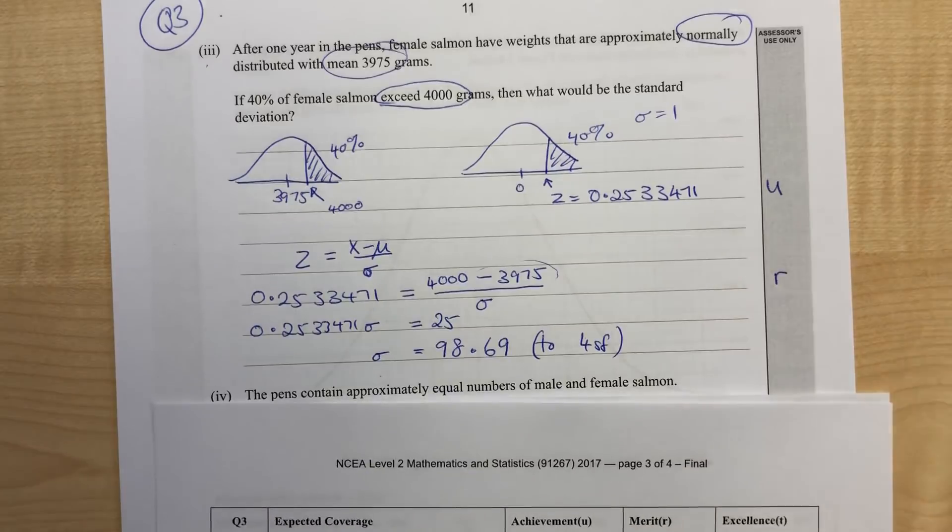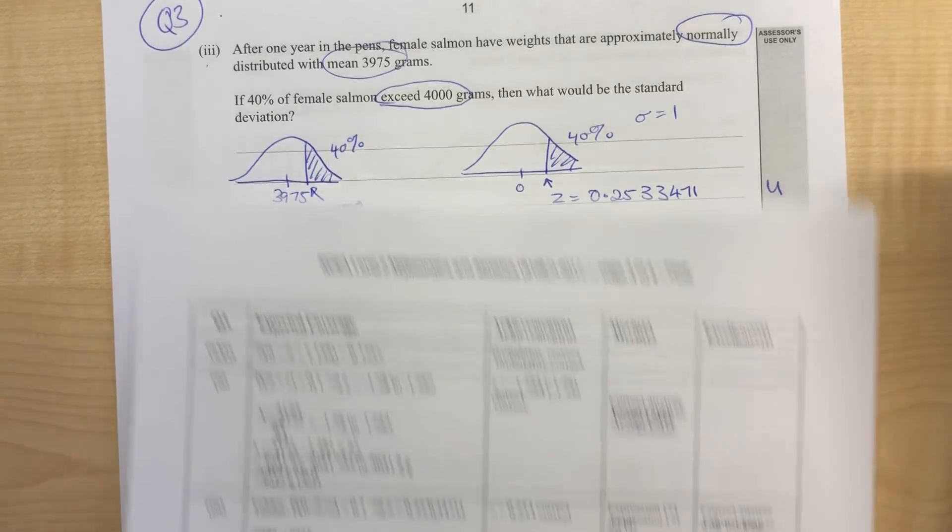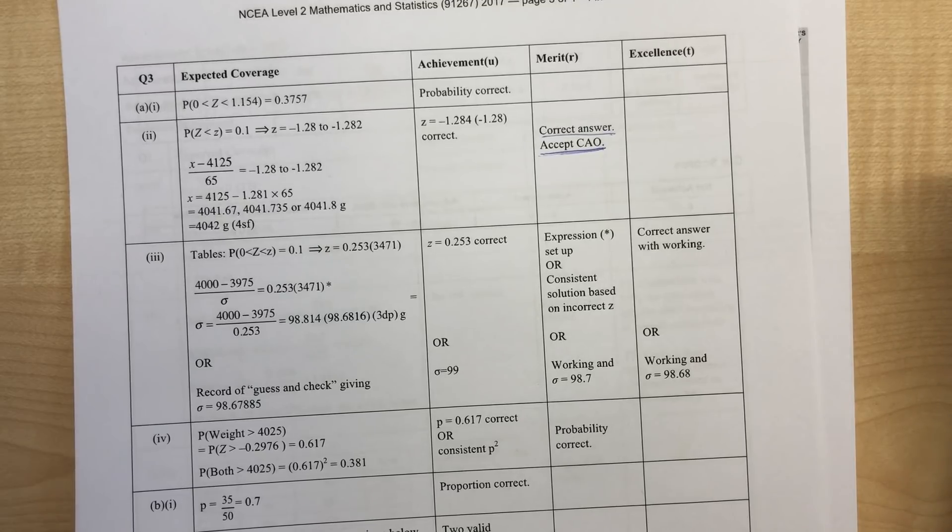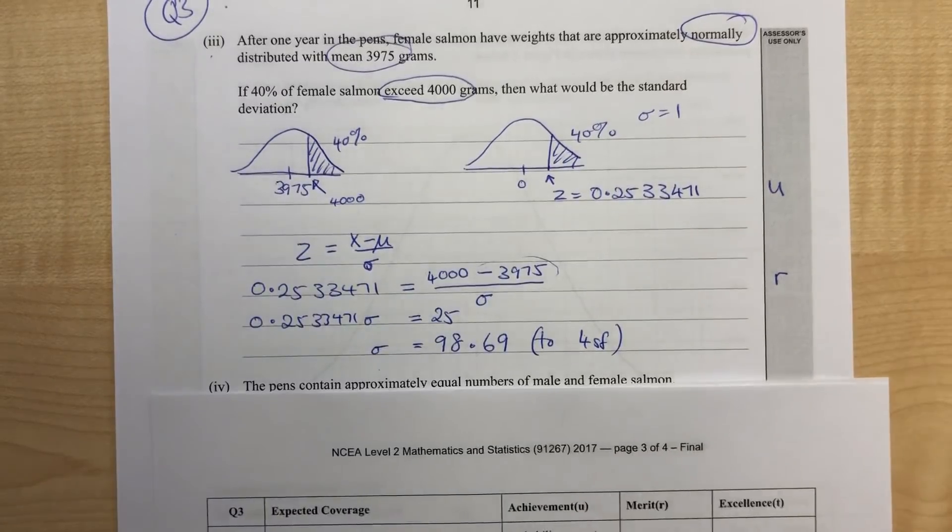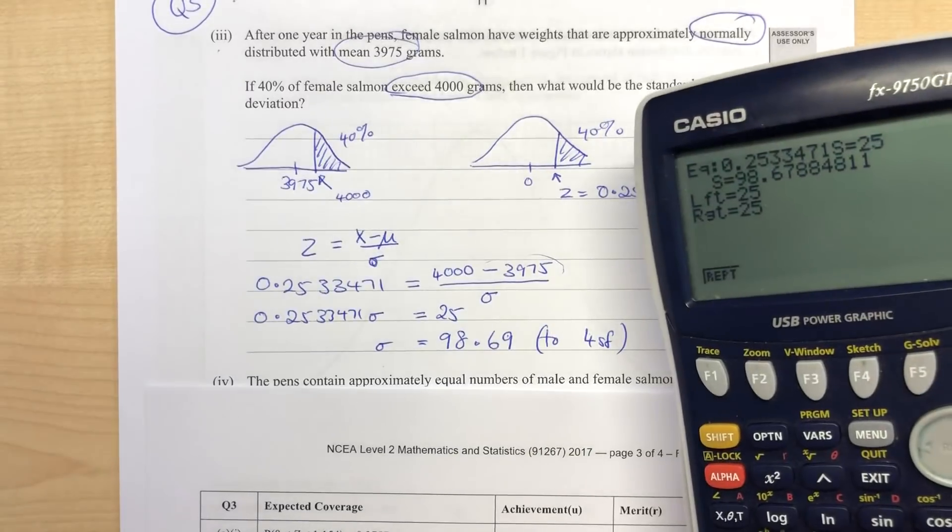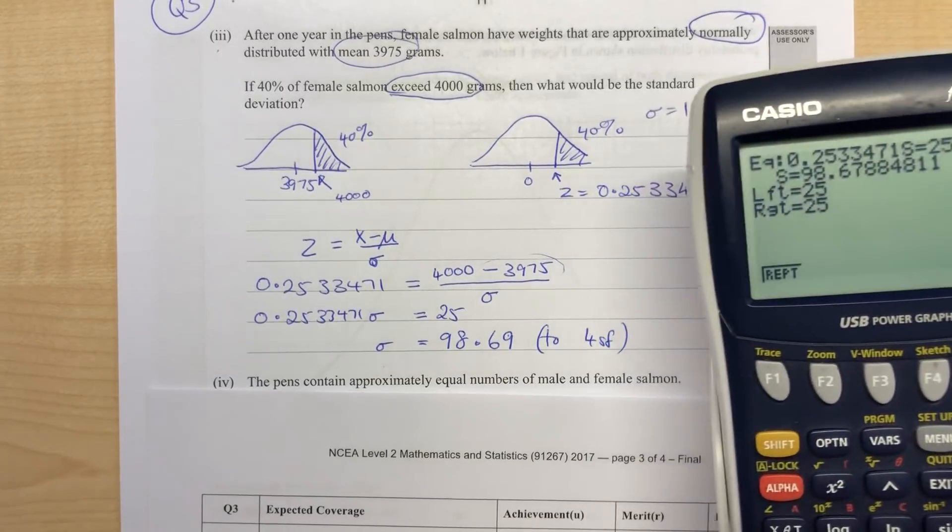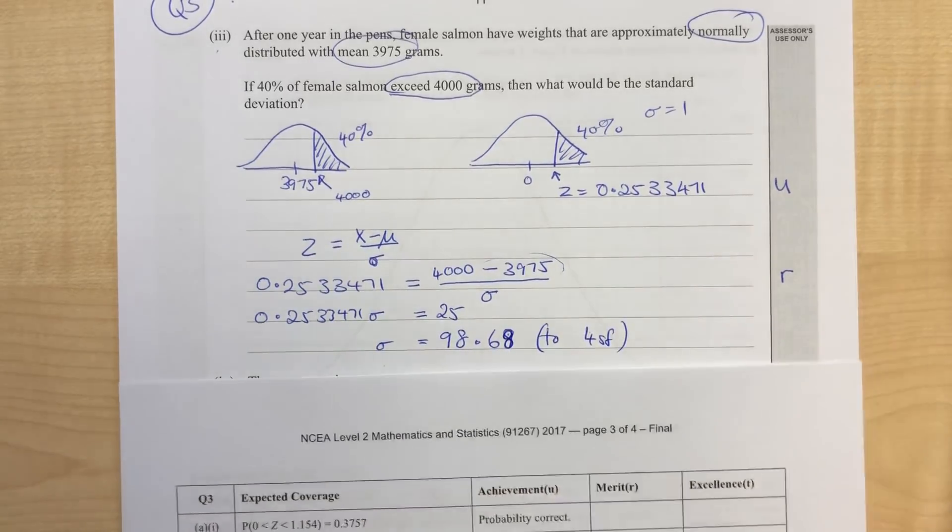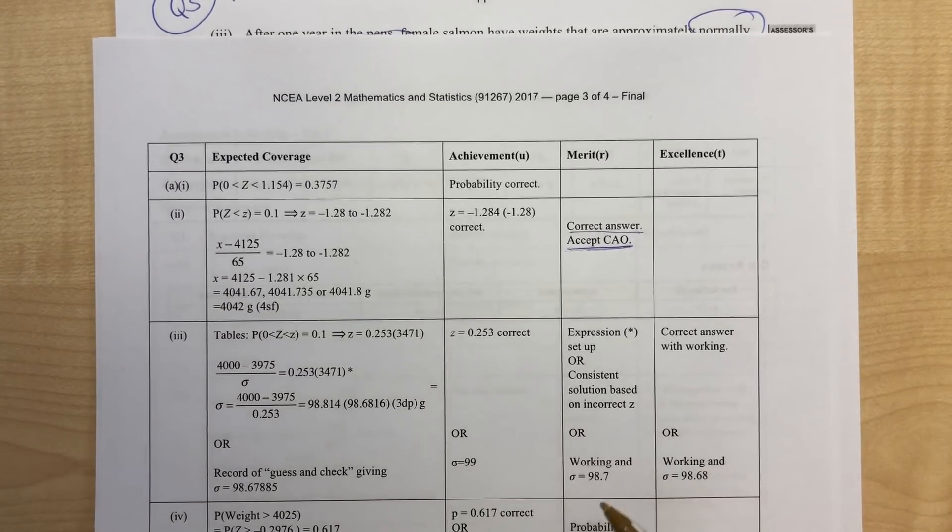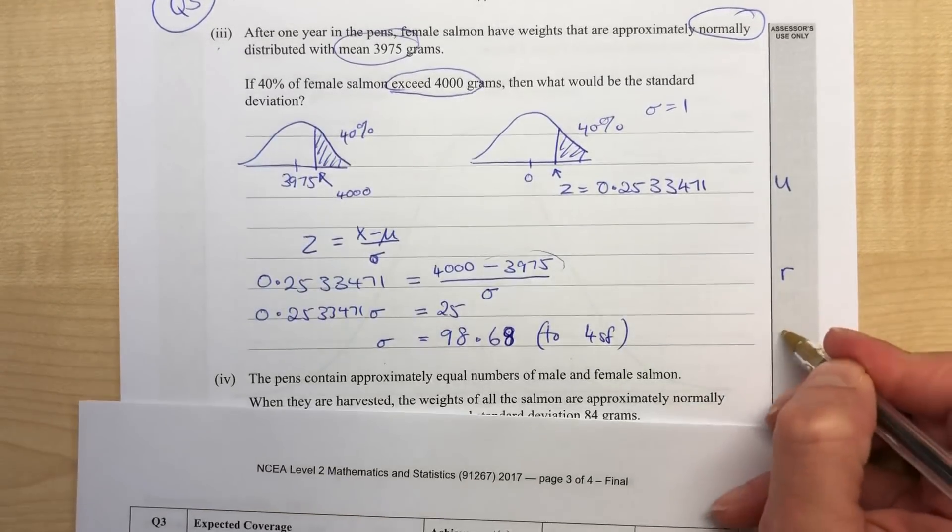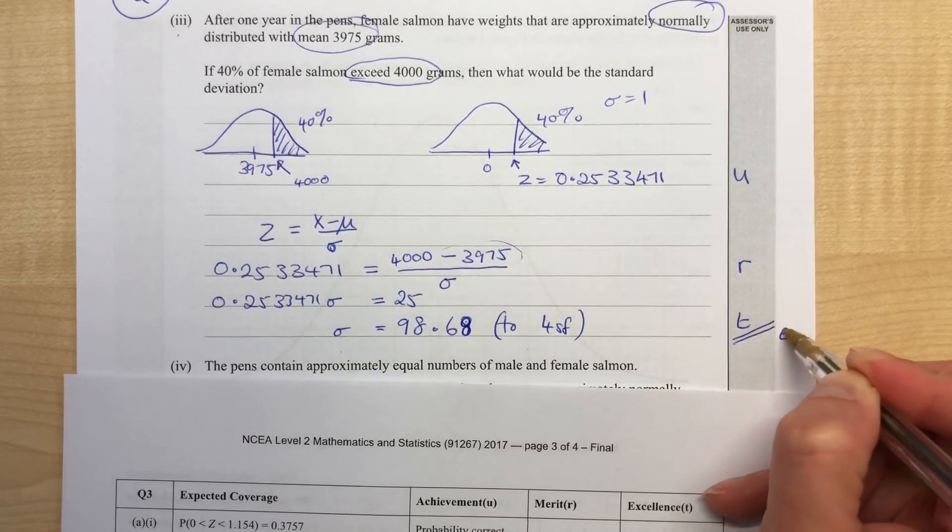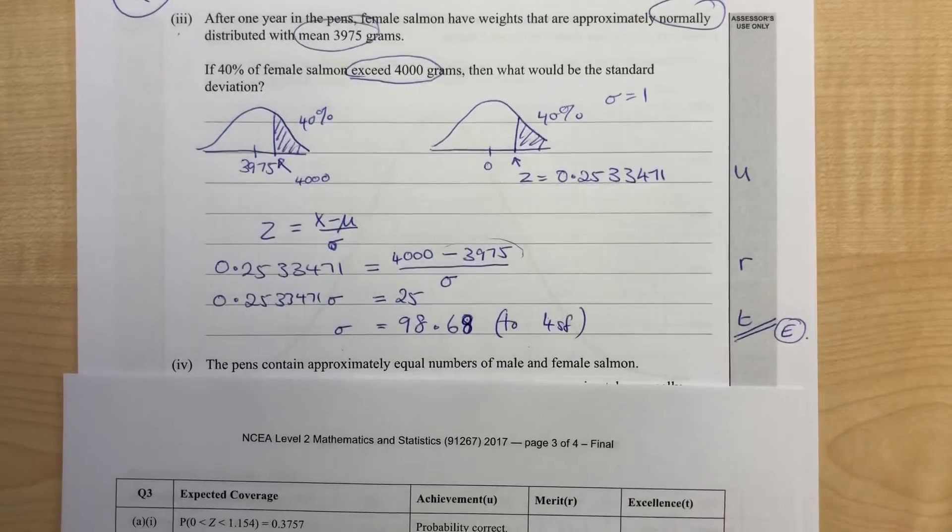If we can go on to solve that correctly, then we get the excellence. The answer here says 98.68. I incorrectly rounded there - my 98.67 should have been rounded to an 8 at the end. If we got to that right answer, we get our T, which means excellence on that question.